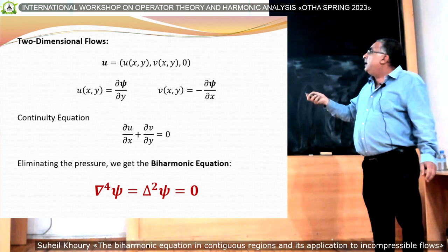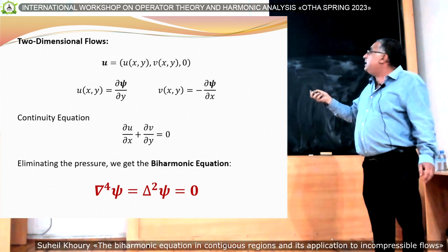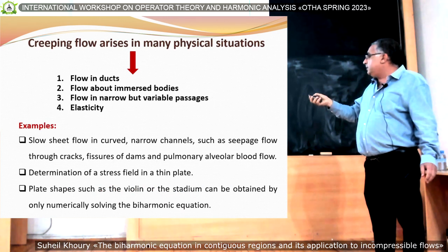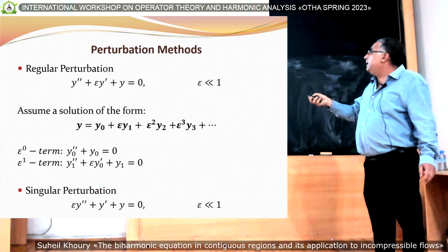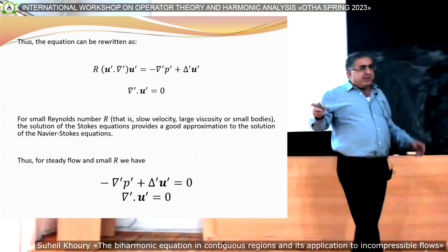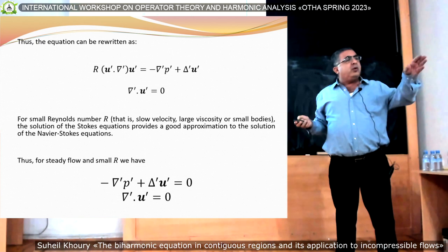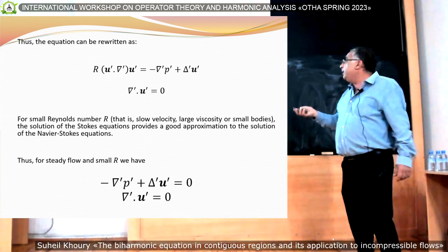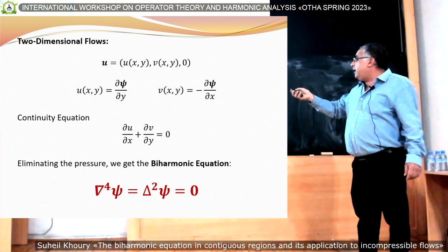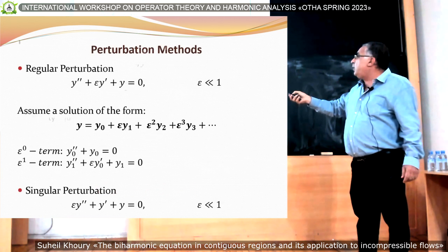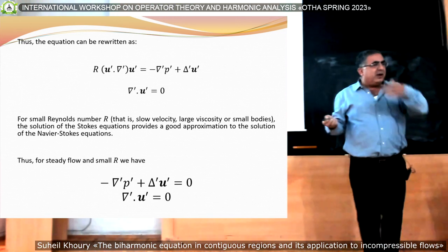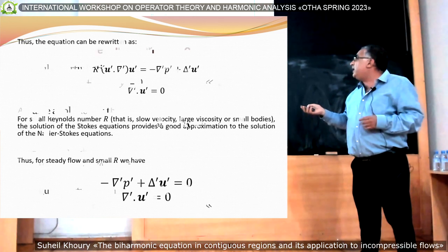Now let's consider two-dimensional flow. Let's define the stream function: del-psi over del-y equals u, and del-psi over del-x equals minus v. Going back to the equation, you see this will be satisfied automatically — the derivative of u in x,y equals u in y,x. When you have this stream function and go back to the equation, the pressure can be eliminated — I won't show you the details — and we end up with a new equation.